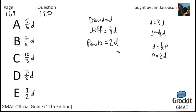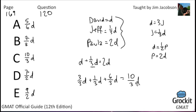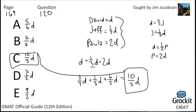How many books do the three of them have together in terms of D? We add David's books plus Jeff's plus Paula's. We need a common denominator — thirds, because of Jeff's books. D in thirds is 3/3 D, Jeff's stays as 1/3 D, and 2D expressed as thirds is 6/3 D. So 3 thirds plus 1 third plus 6 thirds equals 10 thirds. That equals 10/3 D, which is answer choice C.